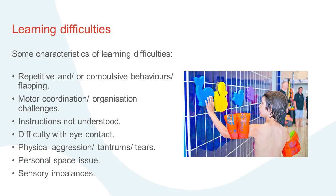The third category is learning difficulties and disabilities. Characteristics here might include repetitive or compulsive behaviours, motor coordination or organisational challenges, difficulty processing instructions, difficulty with eye contact, physical aggression, tantrums or tears, and issues with personal space or sensory imbalances. These are things that people might often mistake for bad behaviour.